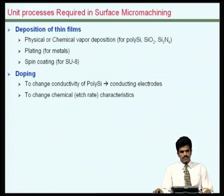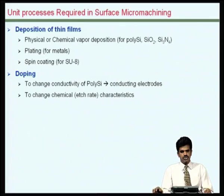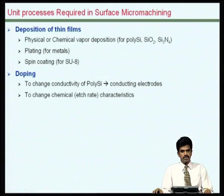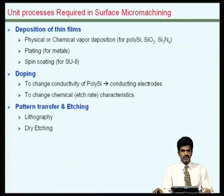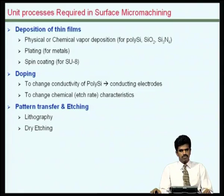It may be required to dope various layers used in making microstructures, and one of the reasons is that when we add these dopants, the structure obviously gets changed and that results in significant changes in some cases of the etch characteristics of those layers. So it is possible that by adding a little dopant, the thin film layers' chemical activity could be significantly affected. Pattern transfer and etching are also required for the definition of those structures as well as for their release.